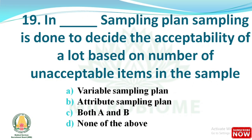Next question: in which sampling plan is sampling done to decide the acceptability of a lot based on the number of unacceptable items in the sample? The options are variable sampling plan, attribute sampling plan, both A and B, and none of the above. The right answer is option B: attribute sampling plan.